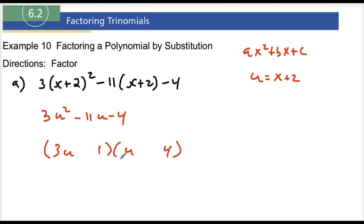Alright, and let's see. I want this to be a negative 11. So 3u times 4, that's a negative 12. But then I'm going to add my 1u right there. So 3u plus 1 times u minus 4. That's how you factor this guy.